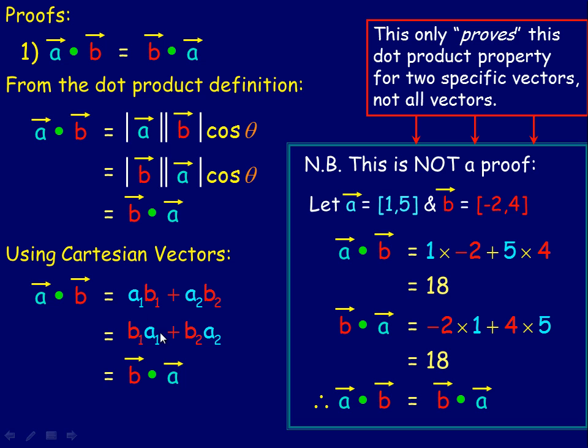This is a proof for any vector, because of the fact that this works no matter what a and b are, and this also works no matter what a and b are. Because we're using, in general, vector a and vector b, or the components are a₁, a₂, and b₁, b₂.